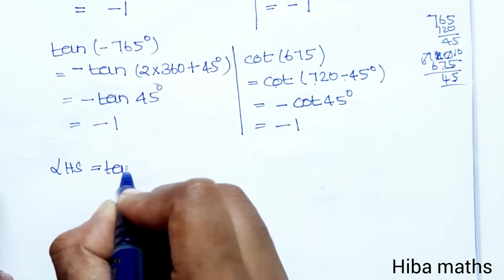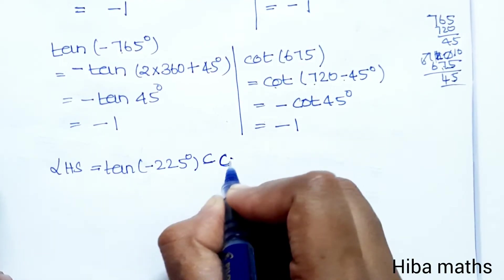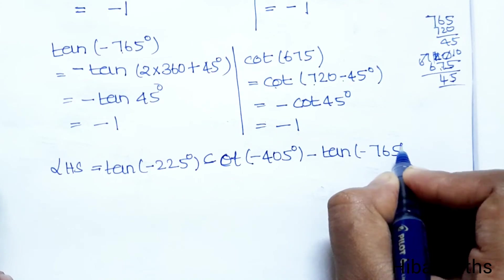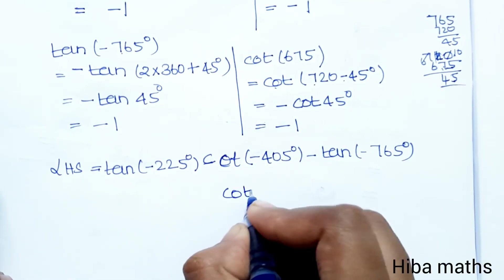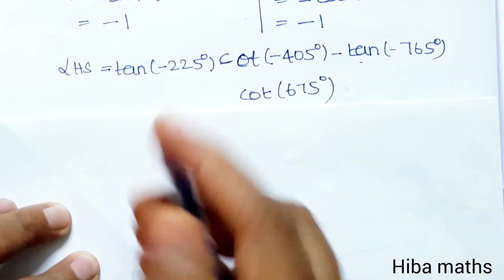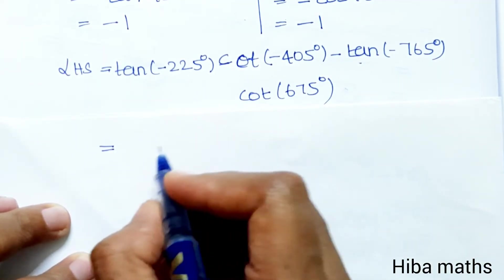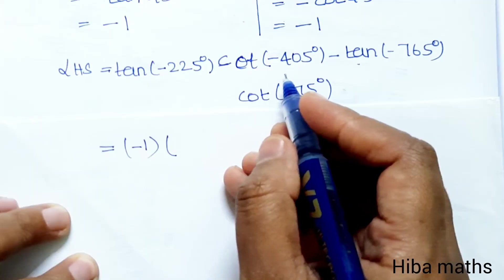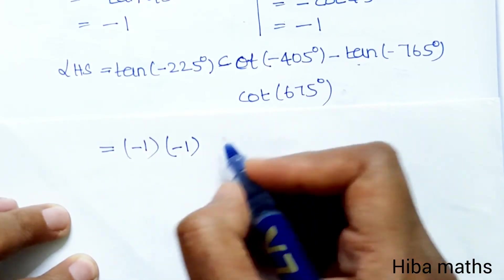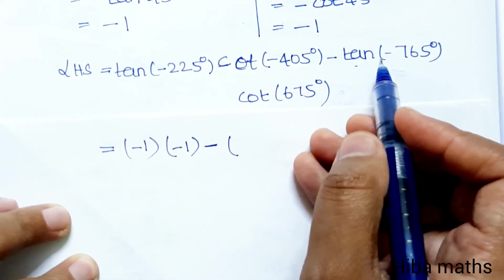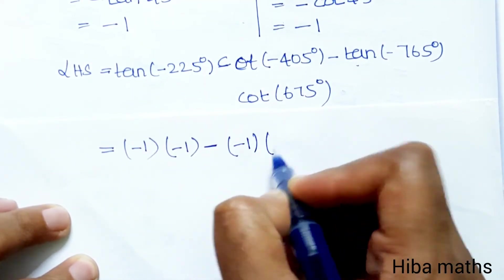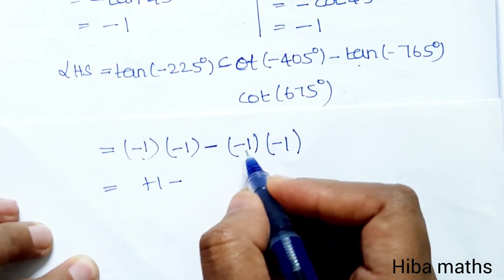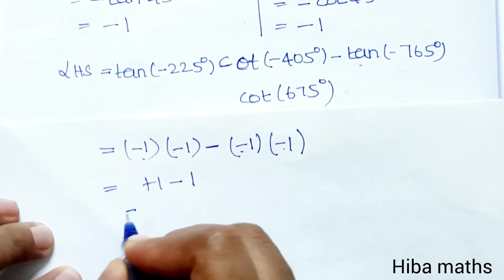Now substitute all values into LHS: tan(-225°)·cot(-405°) - tan(-765°)·cot(675°). Substituting: (-1)×(-1) - (-1)×(-1) = 1 - 1 = 0.